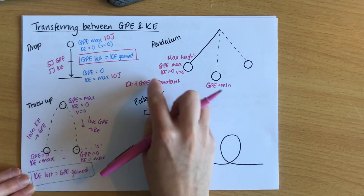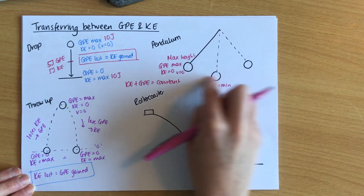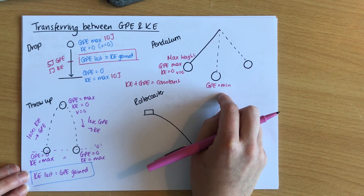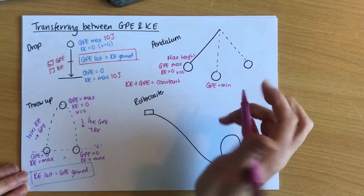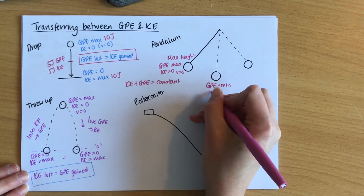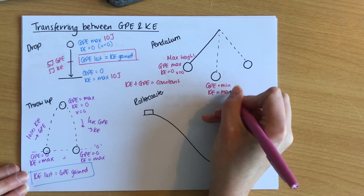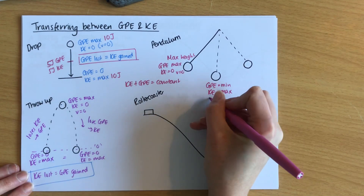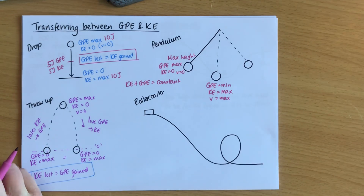I could set the bottom point as zero GPE, or I could just note that it's the lowest GPE in the system. The GPE lost from the max to the min must have transferred into kinetic energy. At that lowest point, the KE is at maximum, which means the speed at that point is also at its maximum. You might have noticed this when you see something swinging.